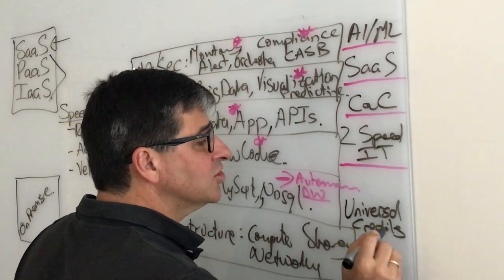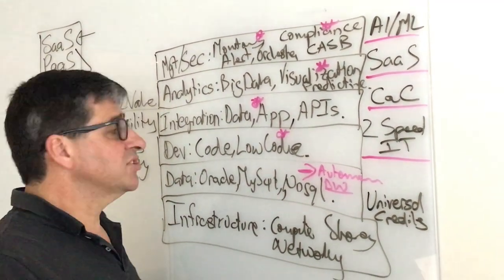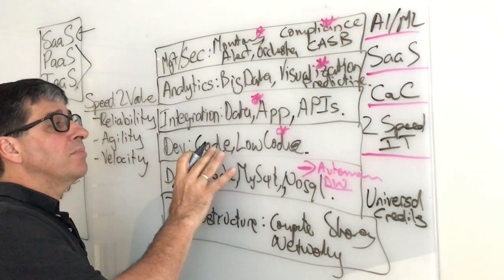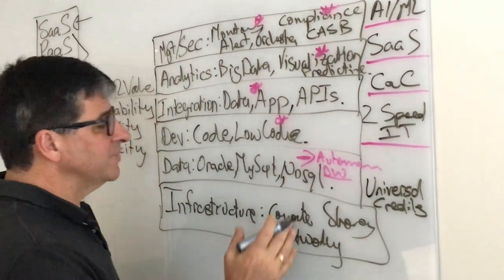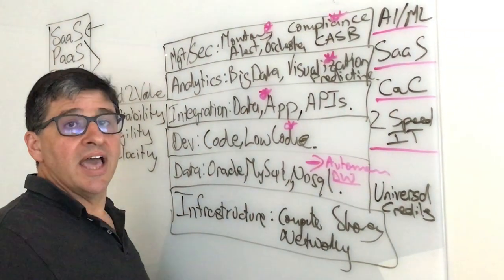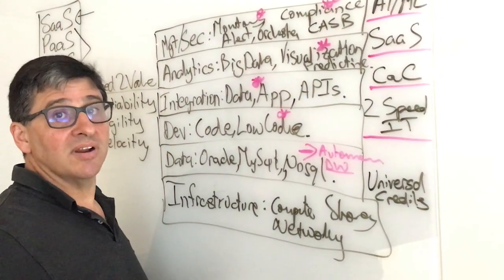The idea of universal credits is you can allocate so much funding on a monthly basis, and then you can decide to consume a bit more database, a little bit more analytics. In the next month, you can up your infrastructure and keep your database there. You can move it around, giving you a lot of flexibility.